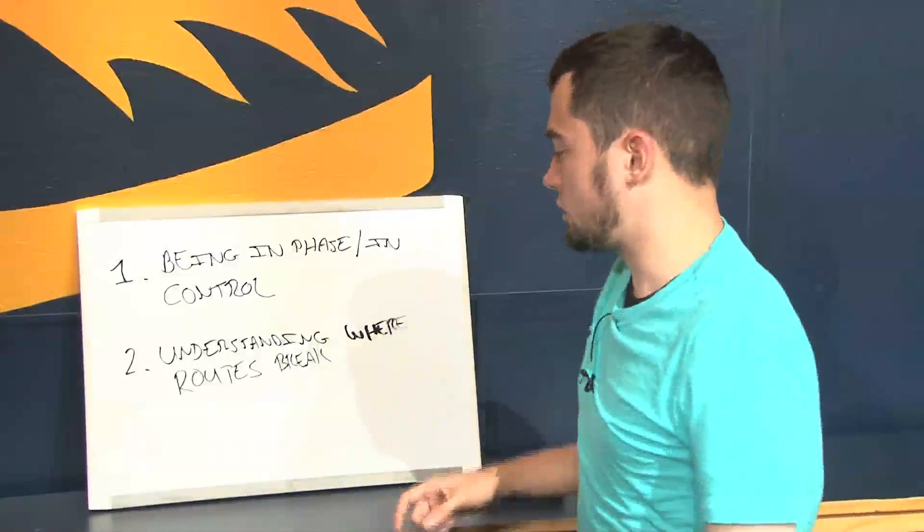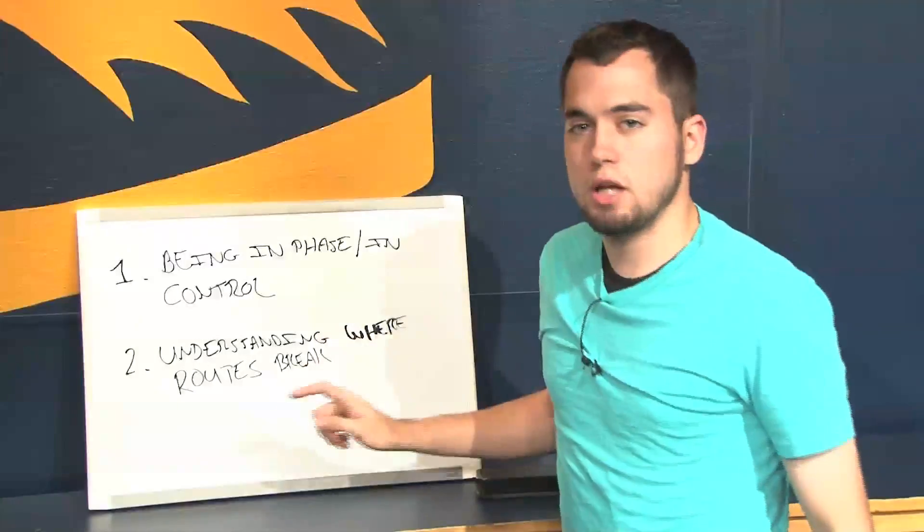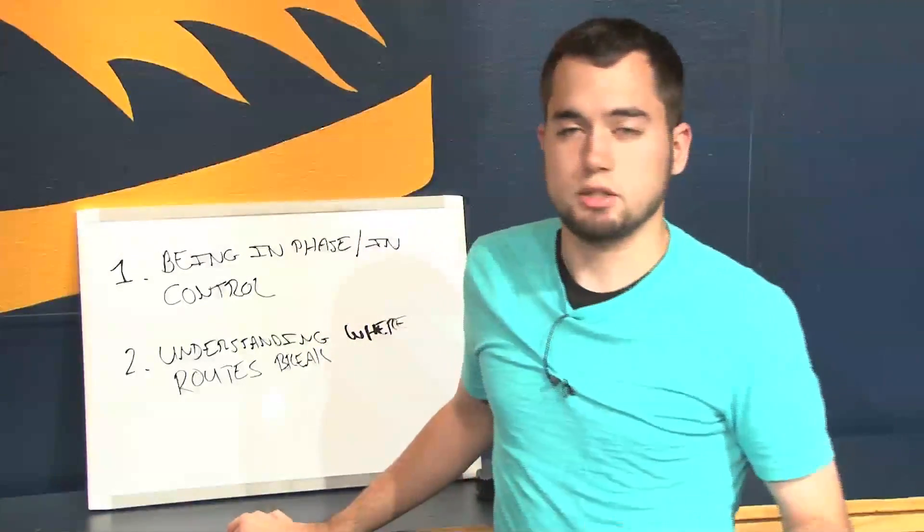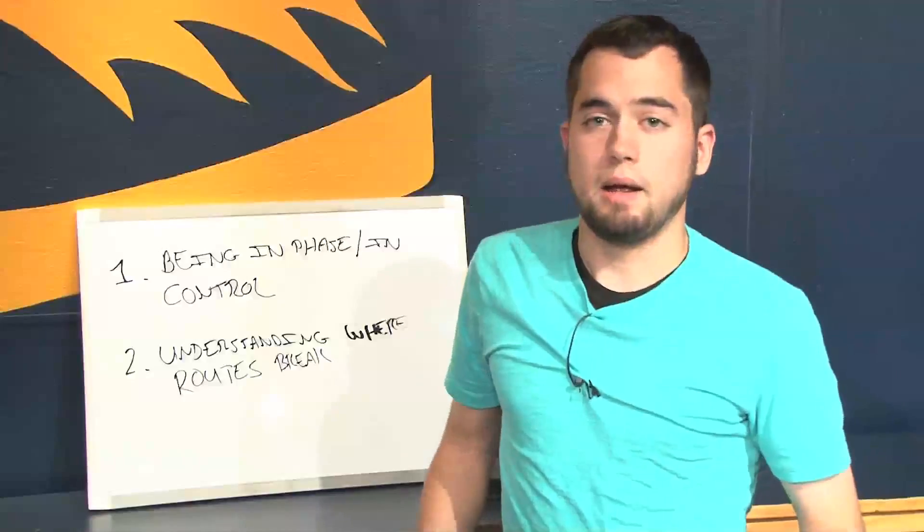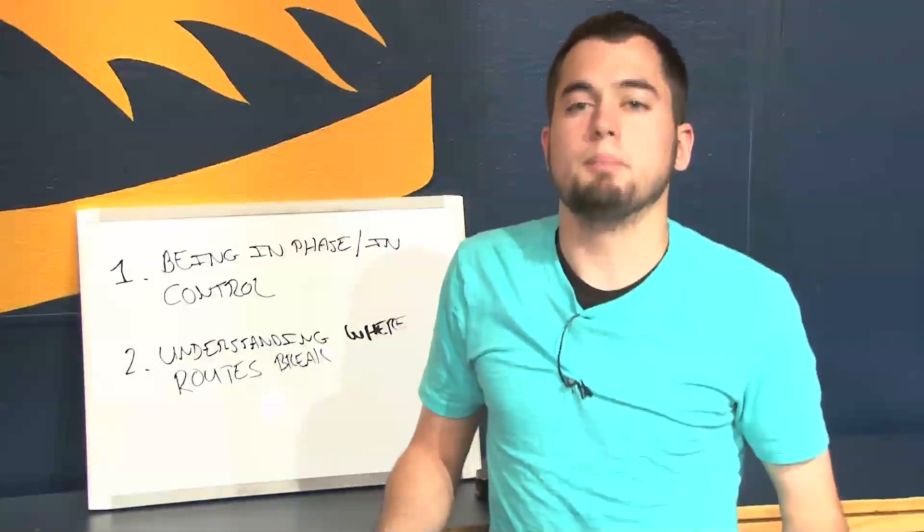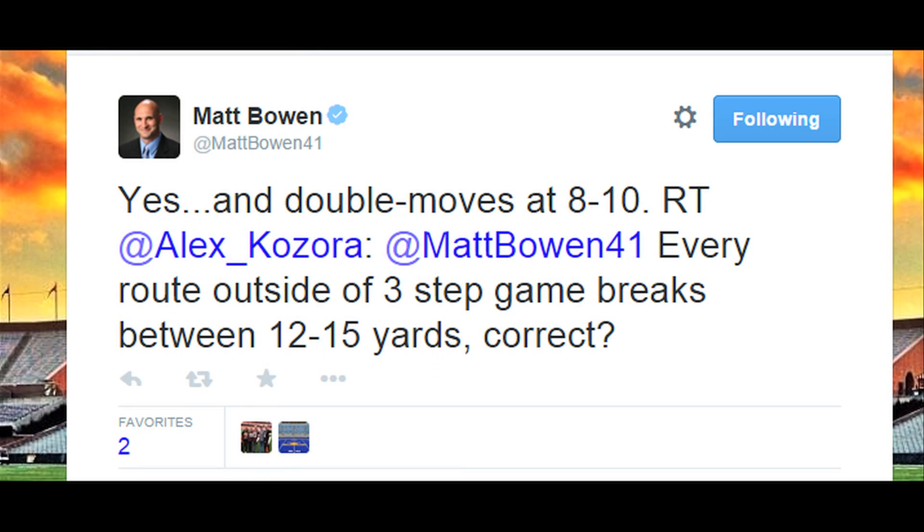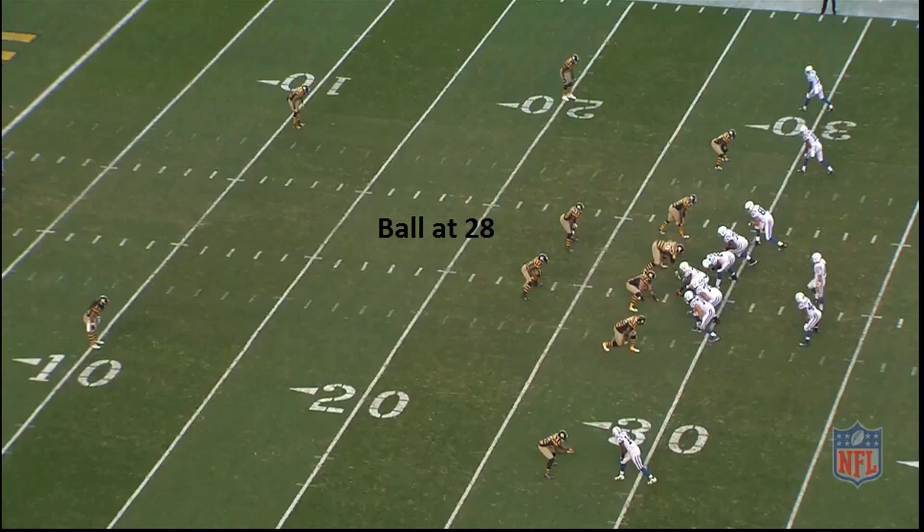The third one, we're going to switch gears. We're going to go to our second point, understanding where routes break. Matt Bowen, who's always done a tremendous job, has talked about this all the time. And I tweeted at him the other day just to double-check with him. He had said that routes will break at 12 to 15 yards outside of the three-step game. Every single route will break at 12 to 15 yards, and then double moves will occur at 8 to 10. This is what we're going to get here on T.Y. Hilton's 28-yard touchdown.